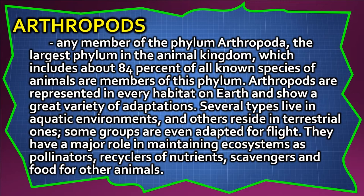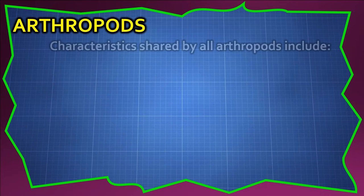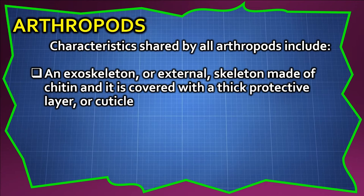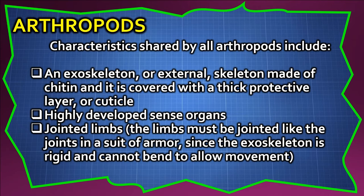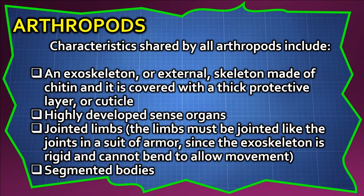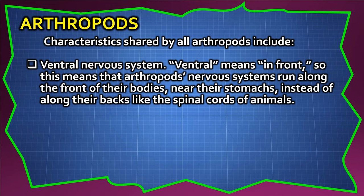Characteristics shared by all arthropods include: an exoskeleton, or external skeleton made of chitin, covered with a thick protective layer or cuticle; highly developed sense organs; jointed limbs — the limbs must be jointed like the joints in a suit of armor, since the exoskeleton is rigid and cannot bend to allow movement; segmented bodies; and a ventral nervous system. Ventral means in front, so arthropods' nervous systems run along the front of their bodies, near their stomachs, instead of along their backs like the spinal cords of vertebrates.